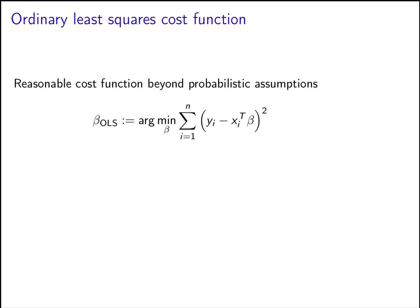Now let's consider a deterministic viewpoint where we forget about MSE theory and probabilistic assumptions. What we say is: we want some constant vector of coefficients such that when we take a linear combination of the observed features in our training set, we approximate the response in our training set. The reasonable way to quantify this approximation is to take the squared difference, sum it over all training examples, and just minimize that. We're being very pragmatic — we have a training set, a linear model, and we just want to fit it as best as possible.